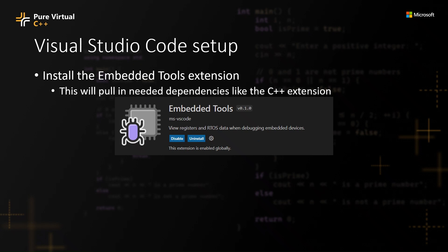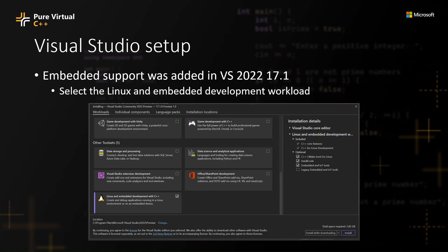Now that we've seen the demo, here's how to get started. For Visual Studio Code, go grab the embedded tools extension — it will pull in all the necessary dependencies like the C++ extension. Everything shown in that demo is also available in Visual Studio. To try it in Visual Studio, you need the embedded support that came in Visual Studio 2022: go to the installer, select the Linux and embedded development workload, and you'll get everything you need.